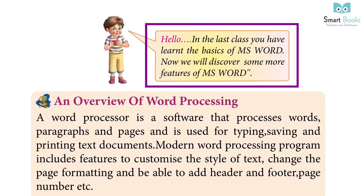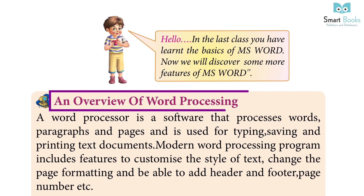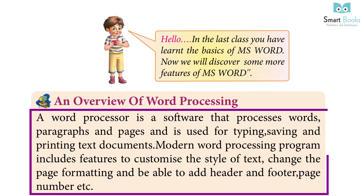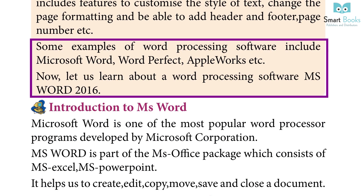An overview of word processing: A word processor is a software that processes words, paragraphs, and pages, and is used for typing, saving, and printing text documents. Modern word processing programs include features to customize the style of text, change the page formatting, and add headers, footers, and page numbers. Examples of word processing software include Microsoft Word, WordPerfect, and AppleWorks.